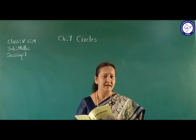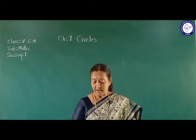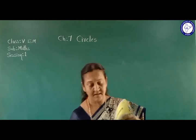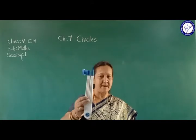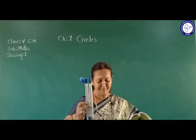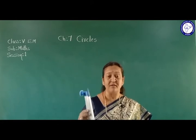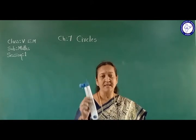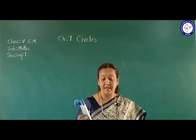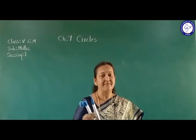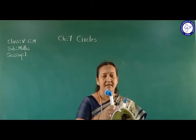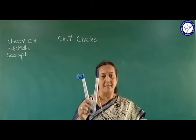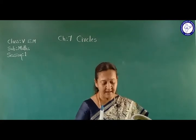The third instrument is called the compass. This is helpful to draw a circle of a given radius. If we are told to draw a circle of 5 centimetres, then with the help of the compass we measure 5 centimetres and we can draw a circle. So this is called the compass.